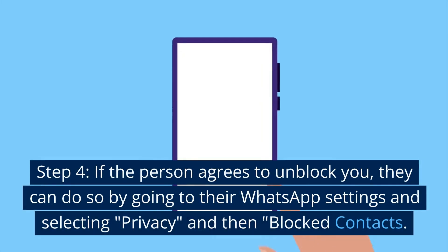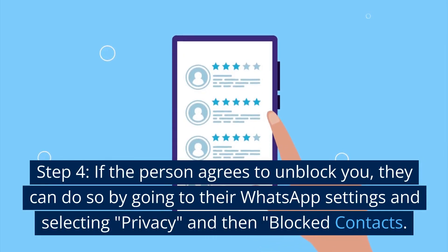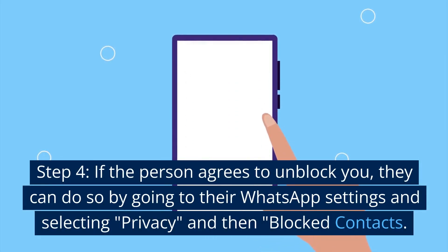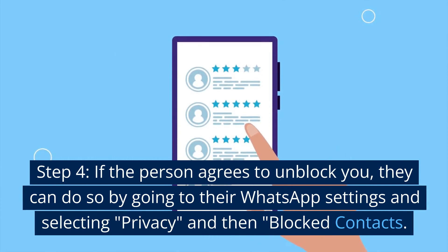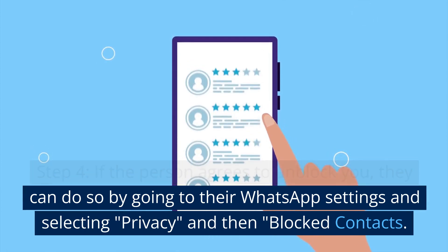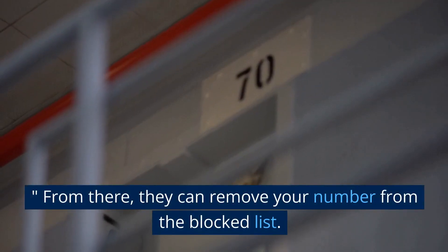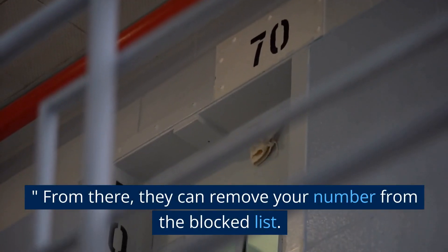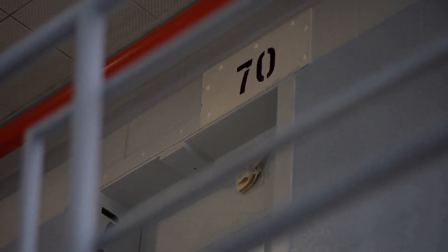Step 4: If the person agrees to unblock you, they can do so by going to their WhatsApp settings and selecting Privacy, then Blocked Contacts. From there, they can remove your number from the blocked list.